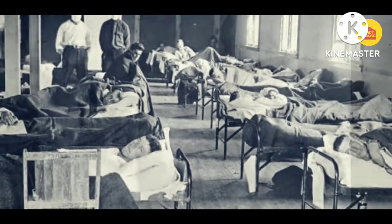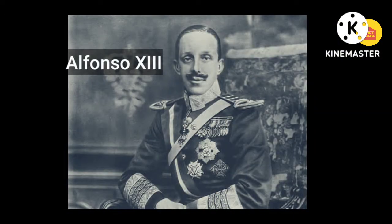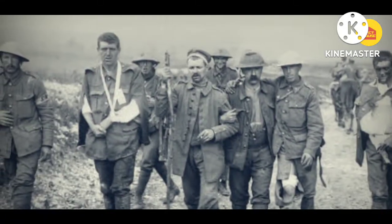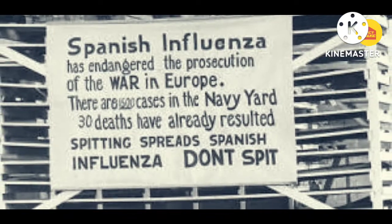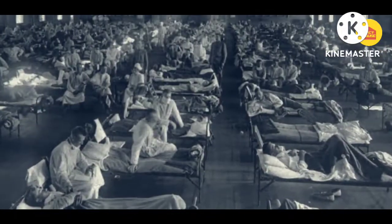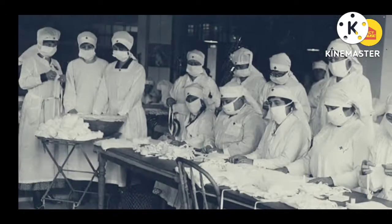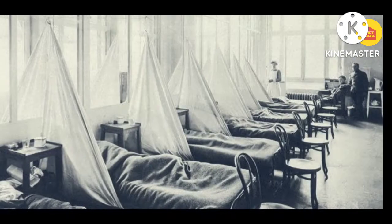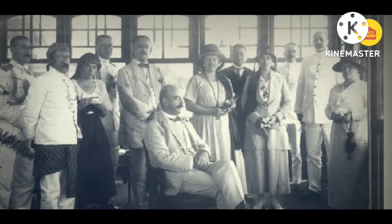The Spanish Flu epidemic caused the collapse of the Spanish government and population. Alfonso XIII, King of Spain at the time, was also reported to have contracted the disease. At that time, World War I was ongoing. Spain was a neutral country that did not join the war, and therefore was the country that actively reported the news — not only about the war, but also about this epidemic. Since Spain was the only source of news about this outbreak, the world believed the virus originated in Spain. In Spain itself, this outbreak was called the French Flu, because the virus was believed to have originated in France.